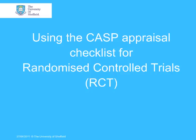We're now going to use the CASP checklist for randomised control trials and work through the checklist. That will give you an idea of the type of questions involved and how these questions can be applied to a scientific paper.